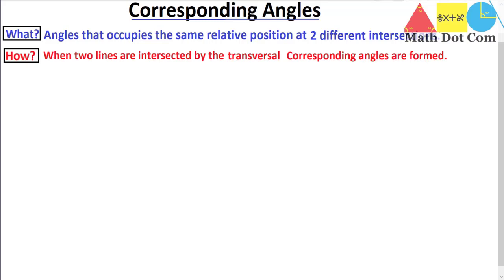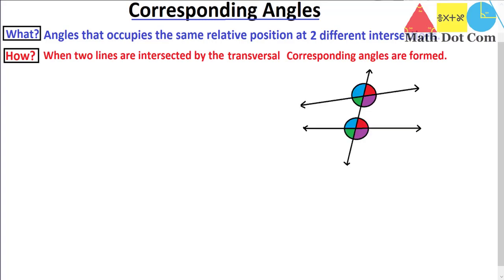Two lines are intersected by a transversal — that is how corresponding angles are formed. One very important point: most of us have the concept that corresponding angles are only formed when the two lines are parallel, but this is not the case. It is not necessary for the two lines to be parallel. Here we have two lines — line one and line two — and these two lines are not parallel to each other, but corresponding angles will still be formed.